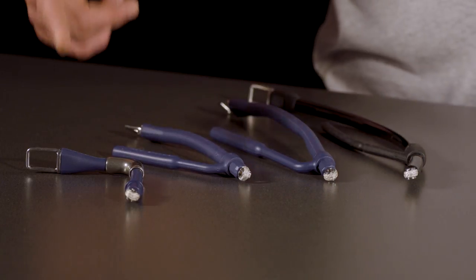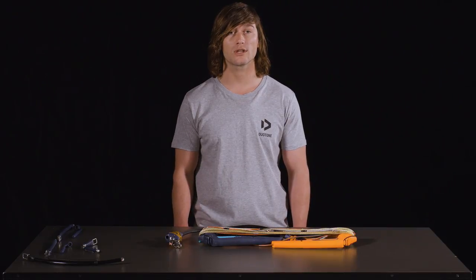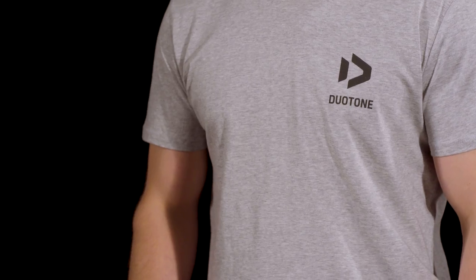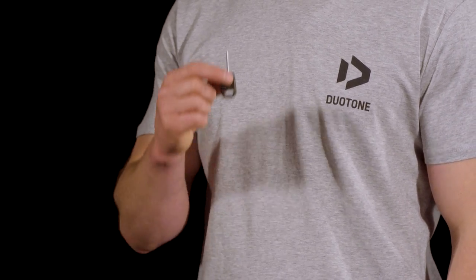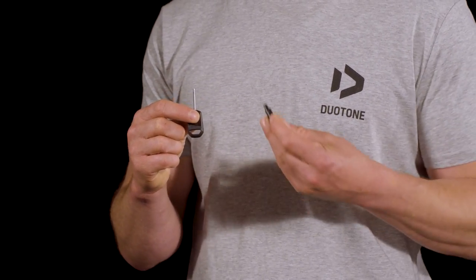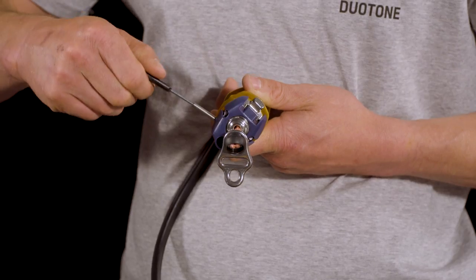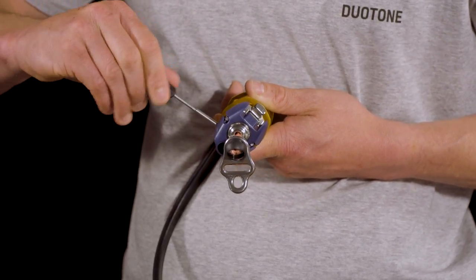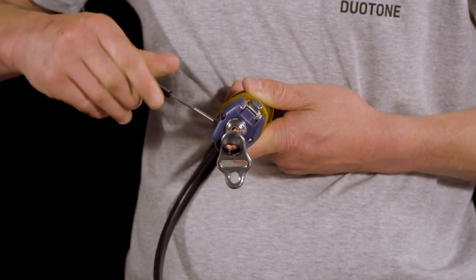It's worth noting that the Duotone bars do not come with the chicken loop included, so you have to order those separately. To change between the chicken loops you will need the allen key tool, the spike tool, and also the allen key screw that comes provided with each of the chicken loop setups.